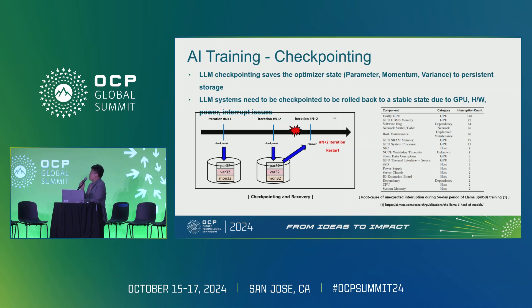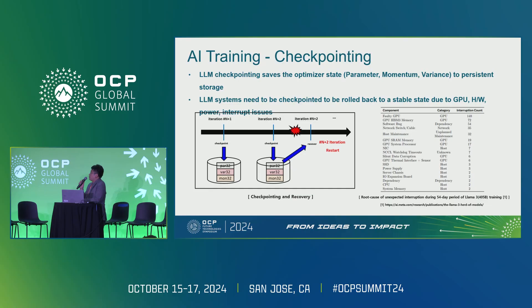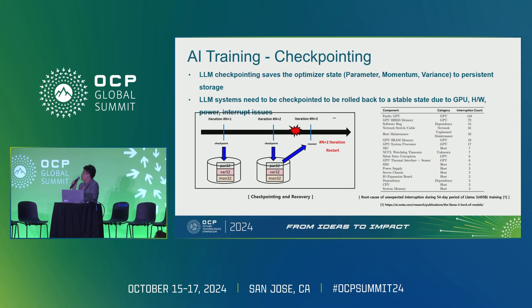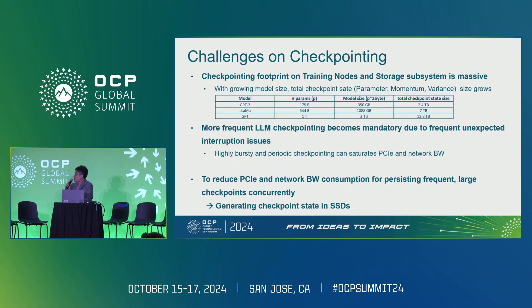First, we should understand what LLM checkpointing is. LLM checkpointing saves the optimizer state to persistent storage. The optimizer state includes parameters, momentum, and variance. The LLM system can be rolled back to a stable state using this stored checkpoint — for example, iteration N+2 can be recovered using stored checkpoint data. Simply put, GPU memory data is stored into persistent storage and SSD. That is LLM checkpointing.